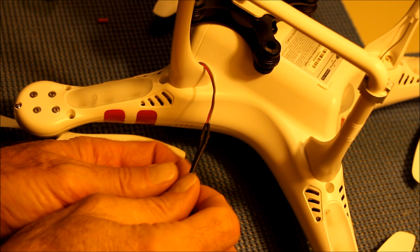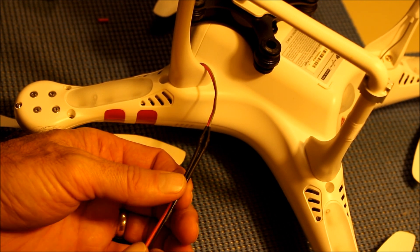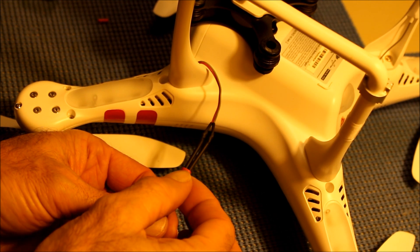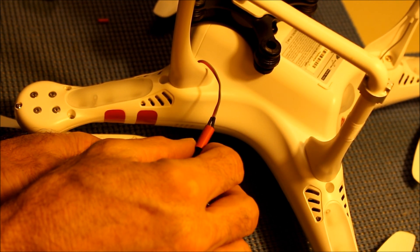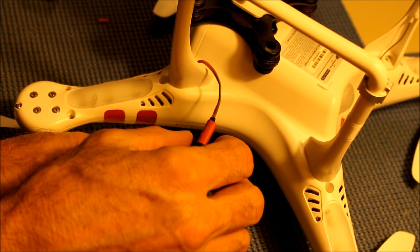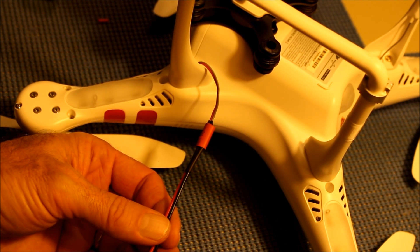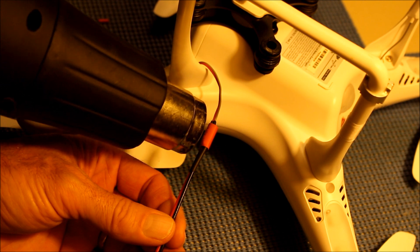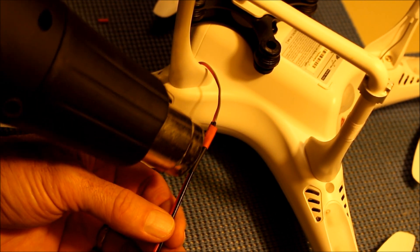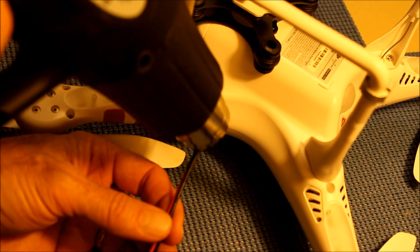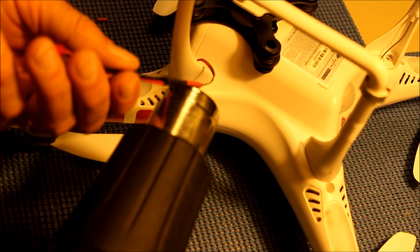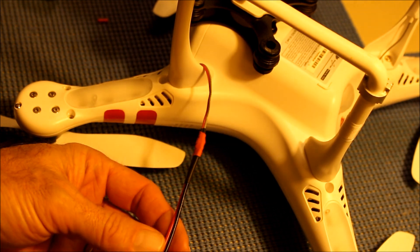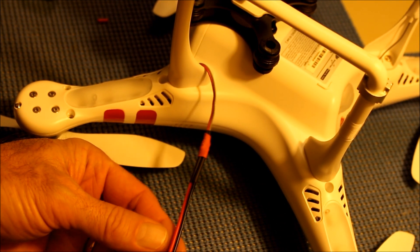I've slid the heat shrink tubing up over the solder connections there. I'm also going to slide this short orange heat shrink tubing and hit it with the hot air gun. Looks like a well-made connection.